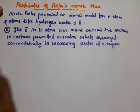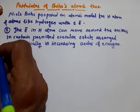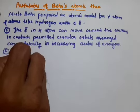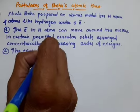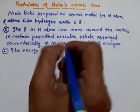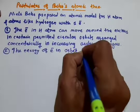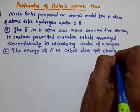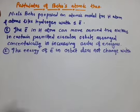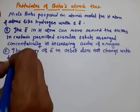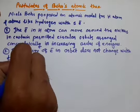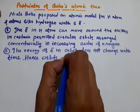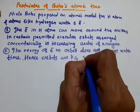Second point proposed by Niels Bohr is: the energy of an electron in the orbit does not change with time. Hence, orbits are called as stationary orbits.